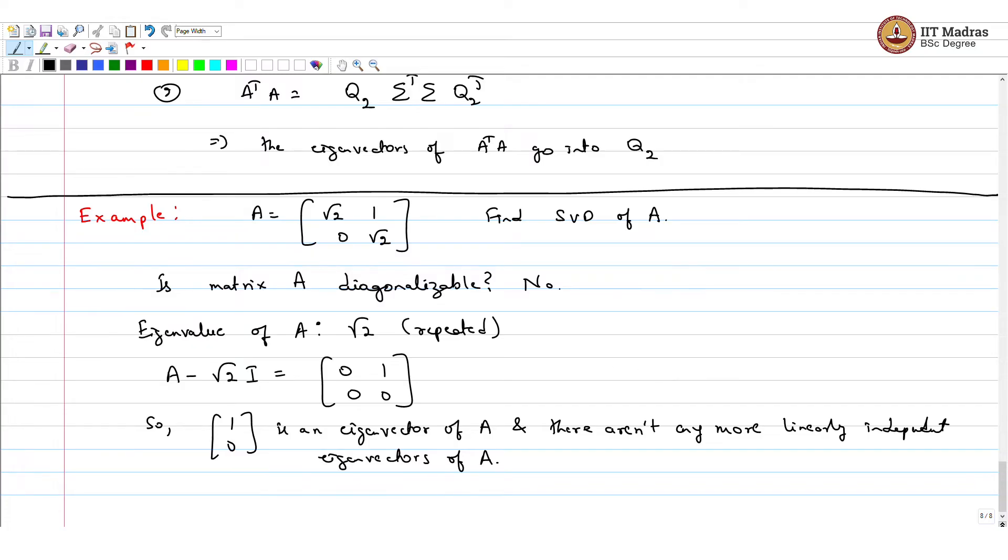The other reasonable thing to do is to do the SVD. Finding the SVD of this matrix square root 2i, what is it? 1, 0, square root 2i.